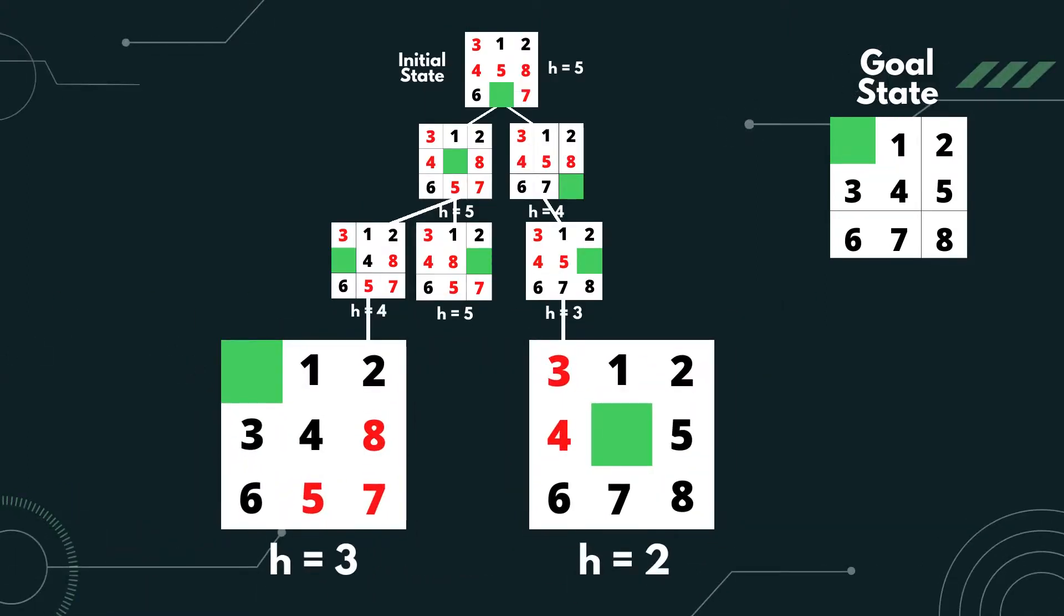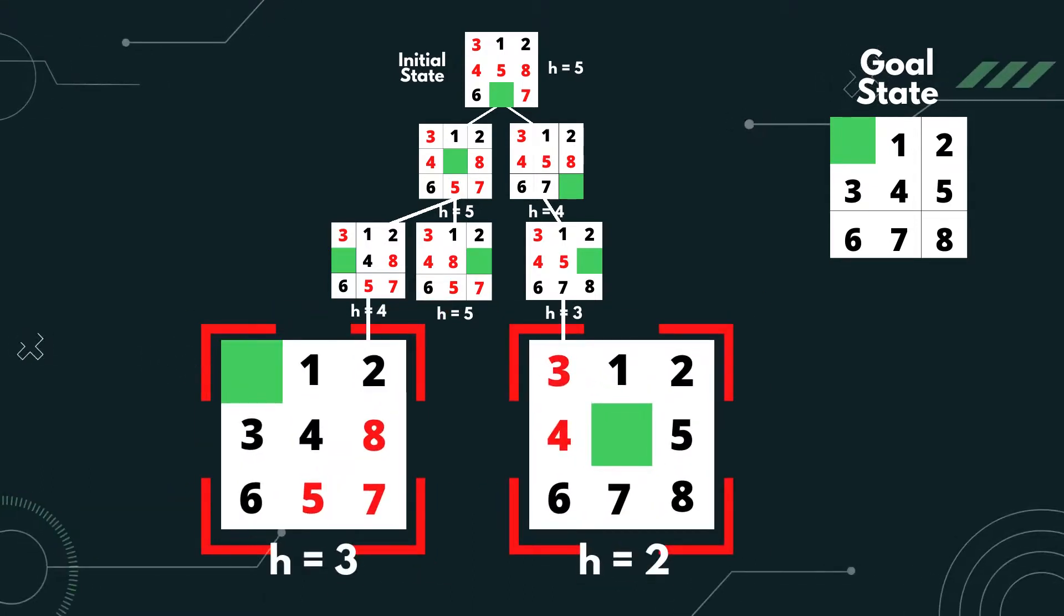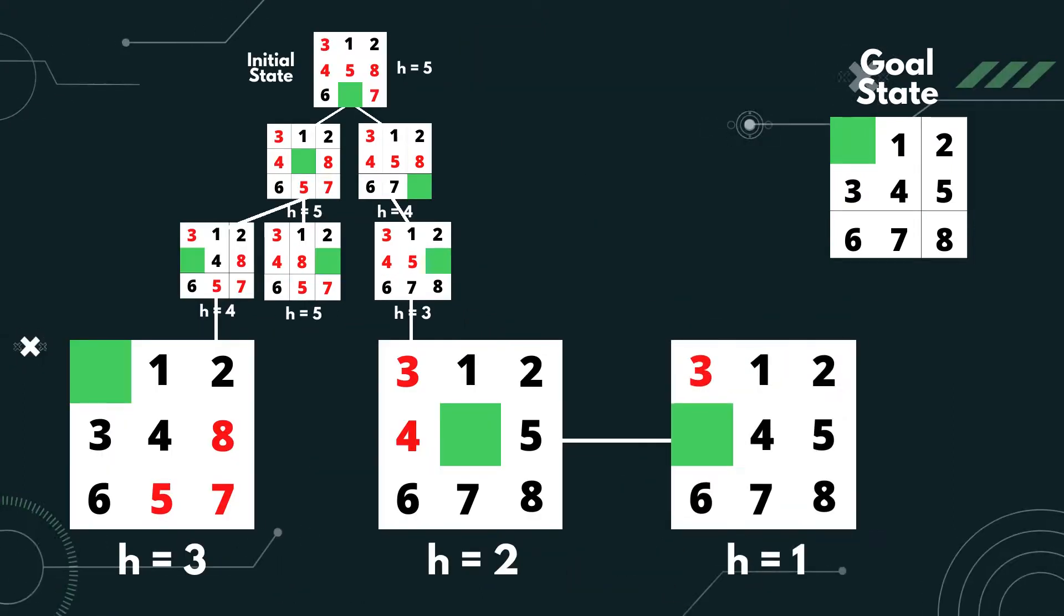Since it is still not the goal, we further generate its successors. Both successors should be expanded. However, for the states on the left, all numbers close to the empty tile are already at the correct place. Therefore, we only expand the right one.